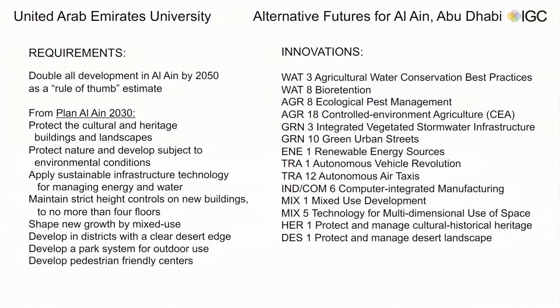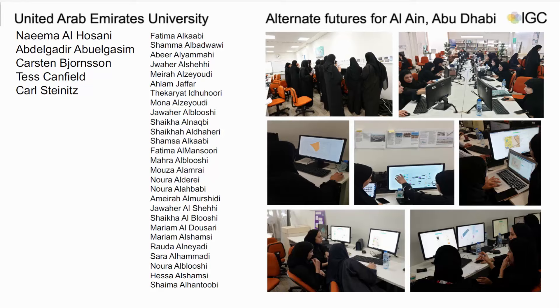I will talk about the requirements and innovation. The requirement is to double all development by 2050 because the population will increase. We also need to protect the heritage and culture of buildings and landscapes, apply sustainable technology for managing water and energy, maintain strict height control in new buildings of no more than four floors to follow Sheikh Zayed's vision, and develop industry with a clear desert identity to distinguish Al Ain from others.